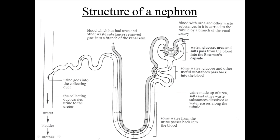As you can see here, you've also got the renal artery. What happens is the blood containing urea and other waste substances passes through this mass of capillaries. And what happens is the water, glucose, urea, and salt — essentially everything — actually comes out.